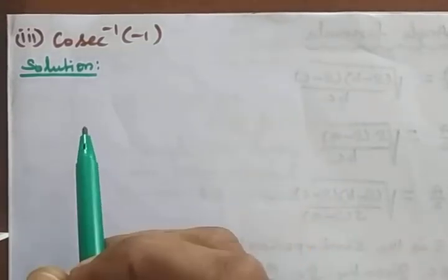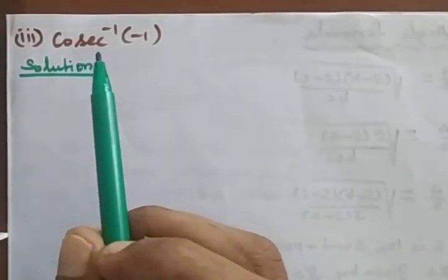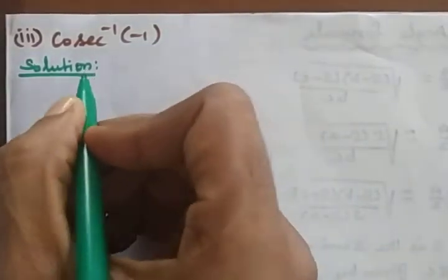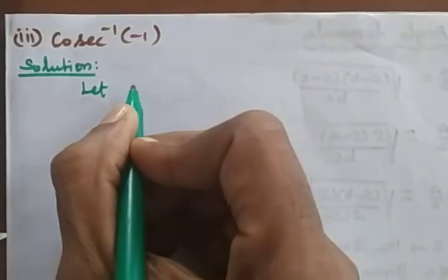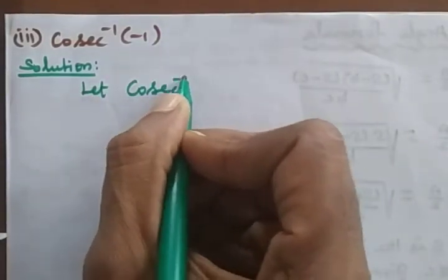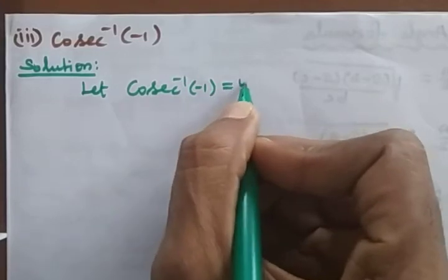Next, find the principal value of cosecant⁻¹(−1). Let cosecant⁻¹(−1) = y, where the interval for cosecant⁻¹(x) is [−π/2, π/2].